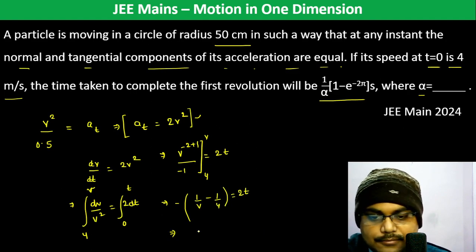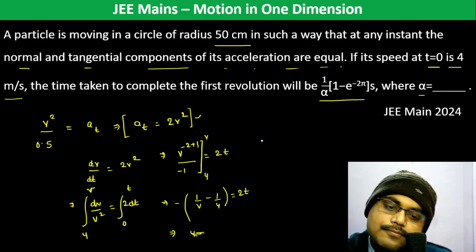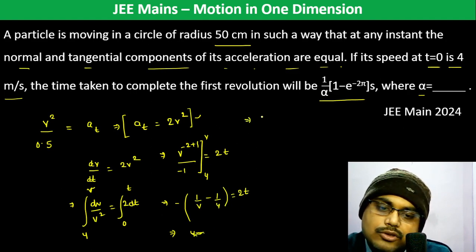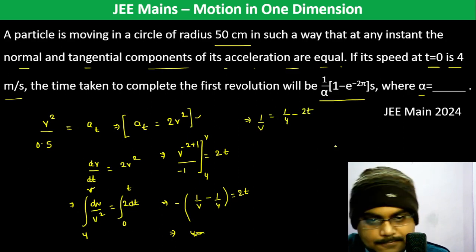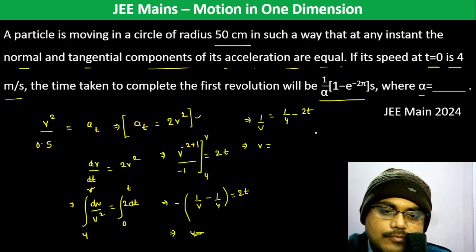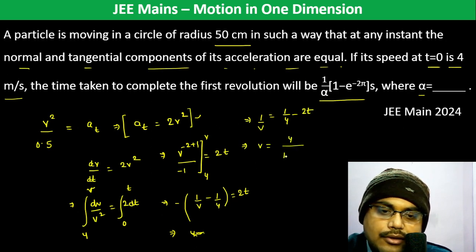Rearranging: 1/4 − 1/v = 2t, so 1/v = 1/4 − 2t = (1 − 8t)/4. Therefore v equals 4 divided by (1 − 8t).